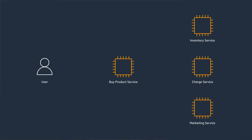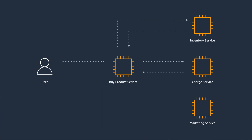One problem I remember was a set of synchronous calls between our services. The user was calling a service to buy a product. Then this service was orchestrating calls to other services to reduce inventory, charge for the transaction, and send some marketing emails. The problems started when, for instance, the service to send the marketing emails was taking too long. That delay in the response was propagated to the buy-product service, and then to the customer.